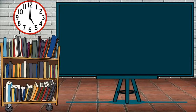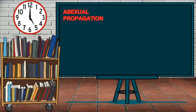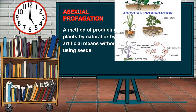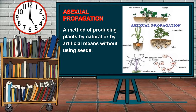The second method of plant propagation is asexual propagation. It is a method of producing plants by natural or artificial means — without using seeds.